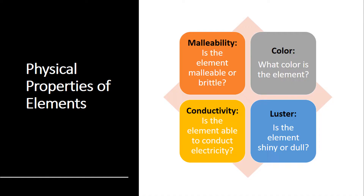If an element is not malleable, the opposite of that is brittle. Elements that are brittle are not flexible. If you were to hit them with a hammer, they would shatter into a lot of different little pieces. So as you watch the video, look carefully at the element. Does it look like it's been bent into a specific shape? Does it look like if you were to hit it with a hammer, it would turn into a powder?